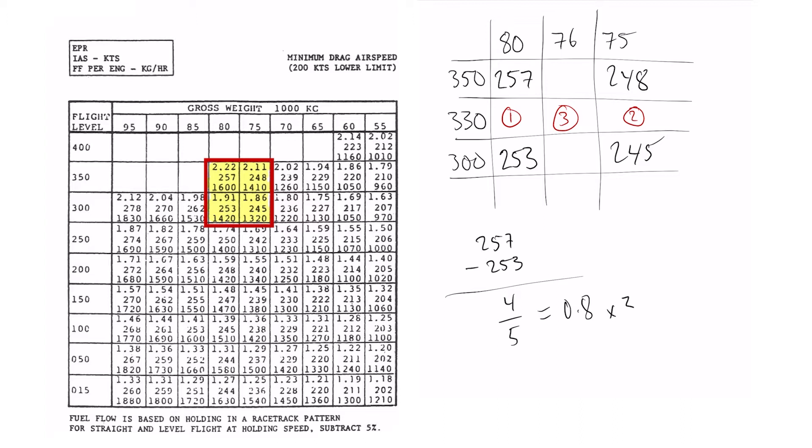Times this number by 3 gives me 2.4 which I'll add on to my 253. Now I like to keep the numbers here to one decimal place and then at the very end that number I can round to the nearest whole number. So 80 ton at flight level 330 I'll be writing down 255.4.